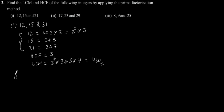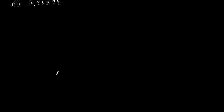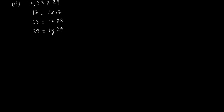Now the second part: 17, 23, and 29. 17 can be expressed as 1 × 17, 23 can be expressed as 1 × 23, and 29 can be expressed as 1 × 29. So we can say that HCF is equal to 1.